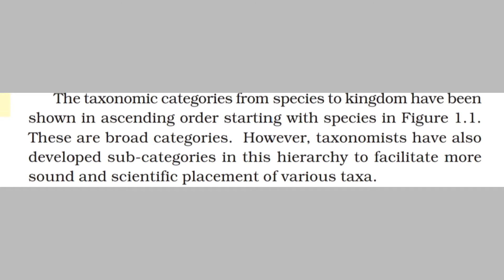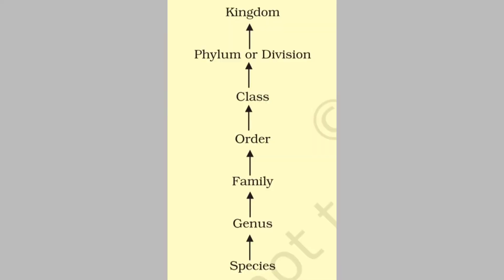The taxonomic categories from species to kingdom have been shown in ascending order. These are broad categories. Taxonomists have also developed subcategories to facilitate more sound and scientific placement of various taxa. Similar species are grouped into genus, similar genera into family, similar families into order, similar orders into class, similar classes into phylum or division, and similar phyla and divisions into kingdom.